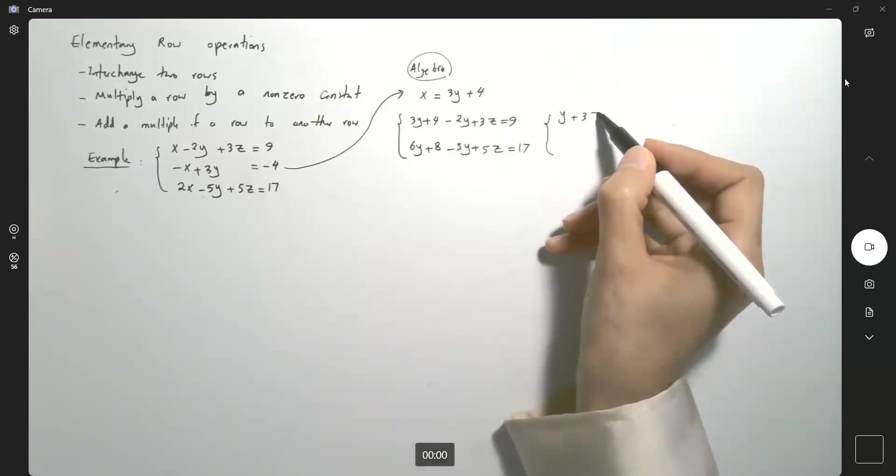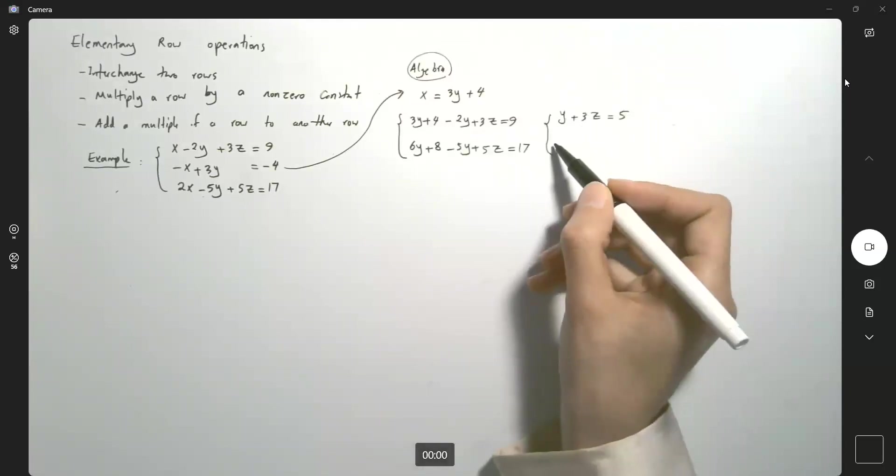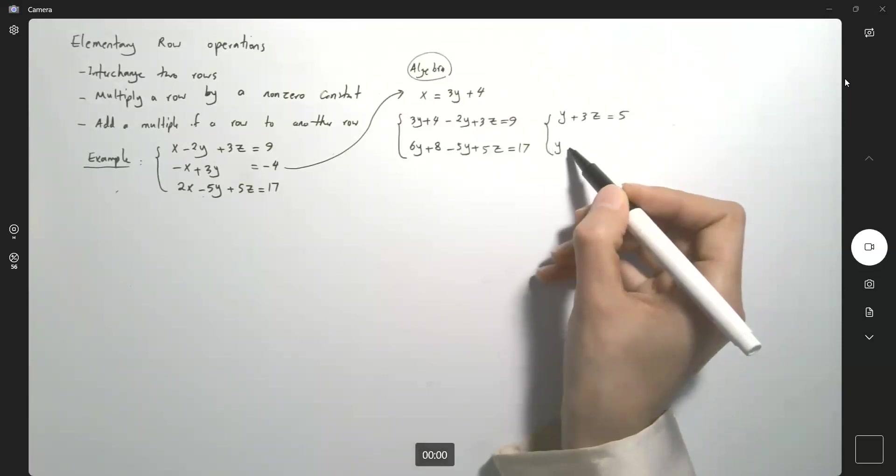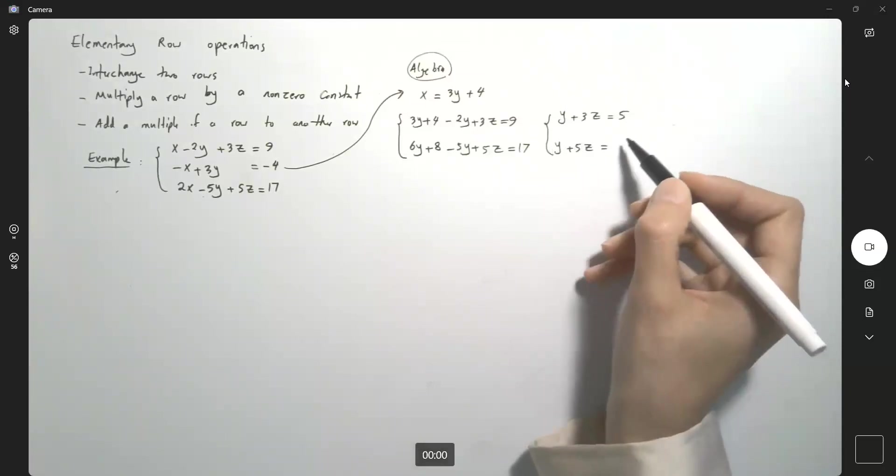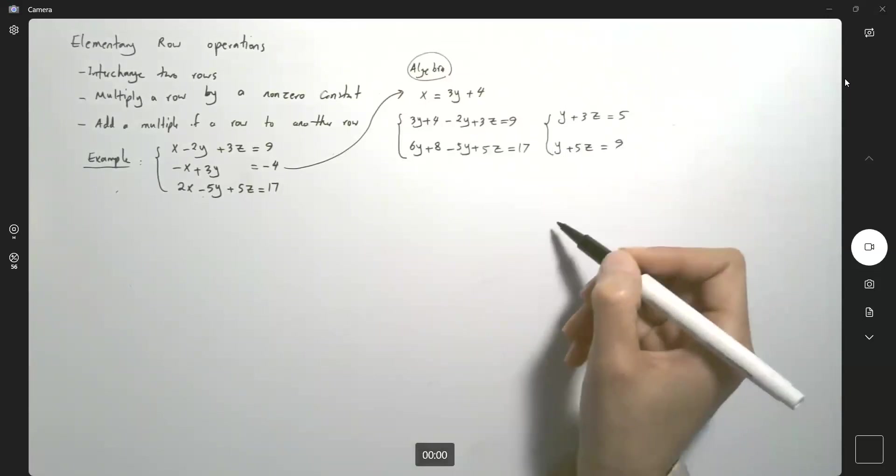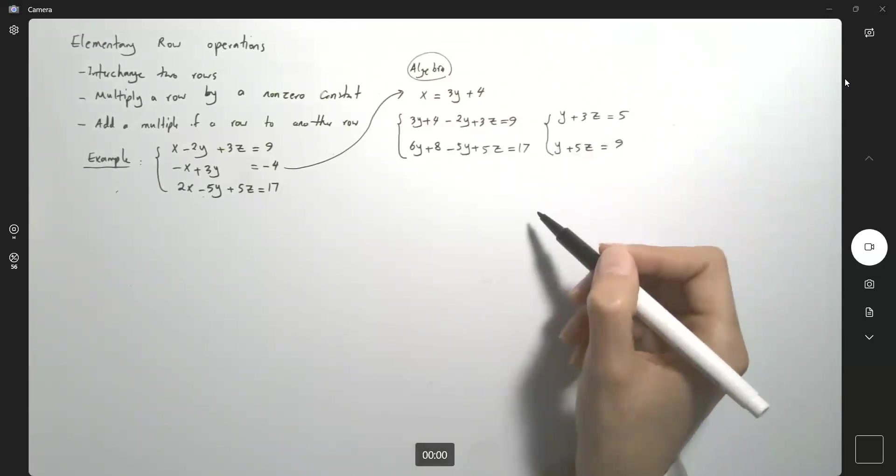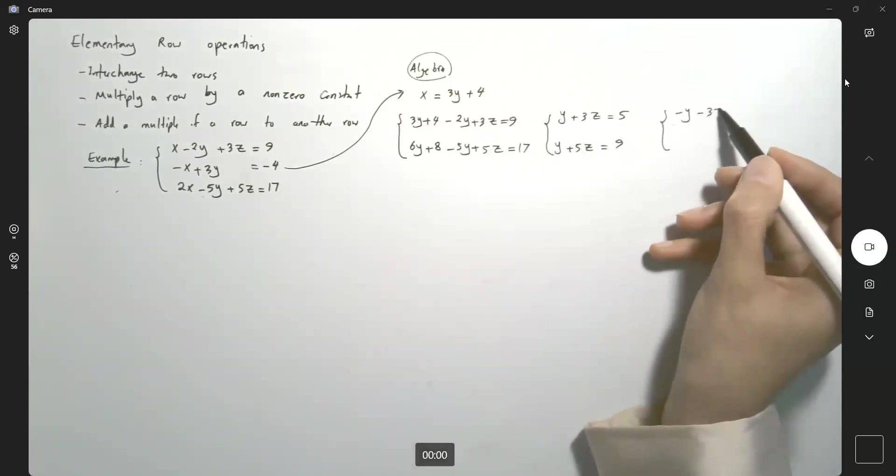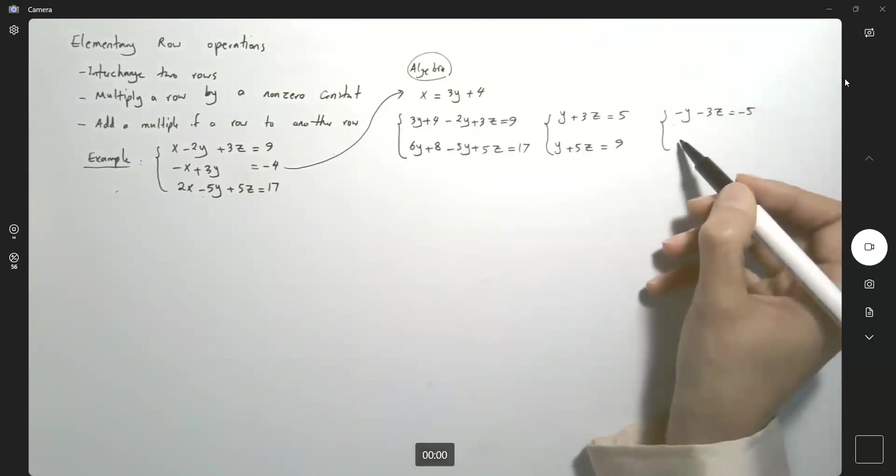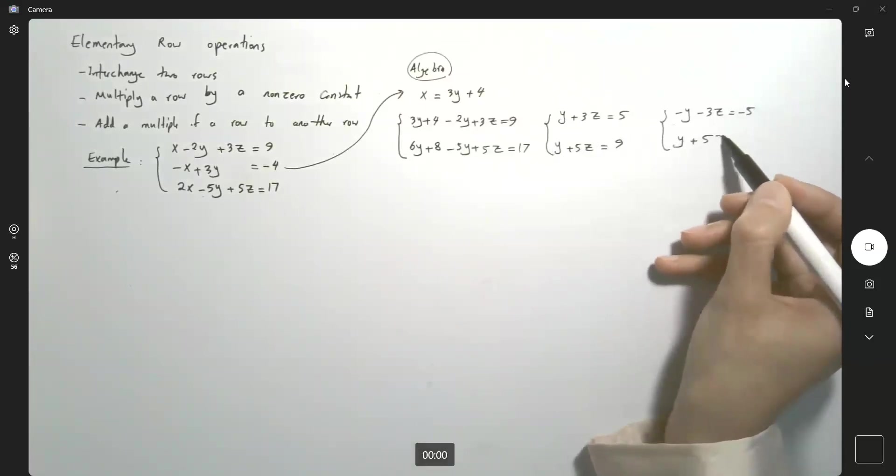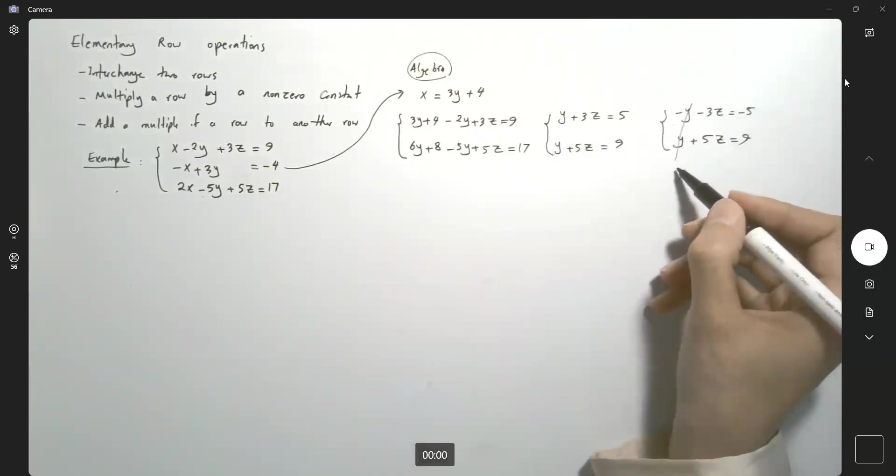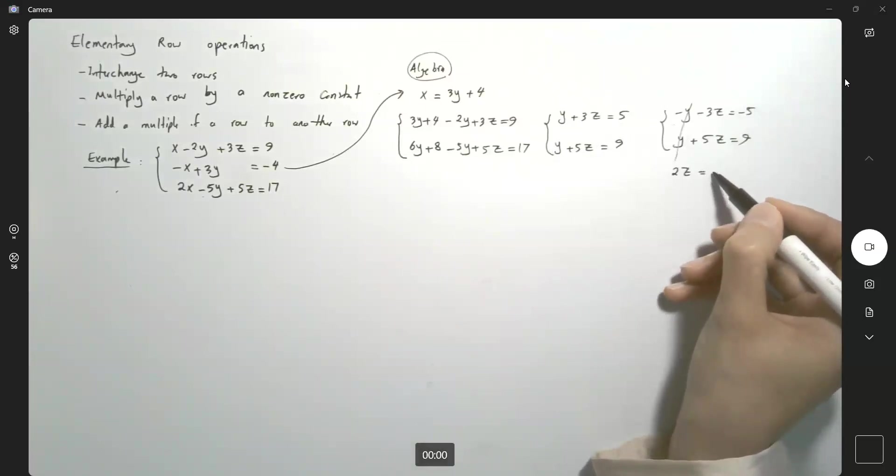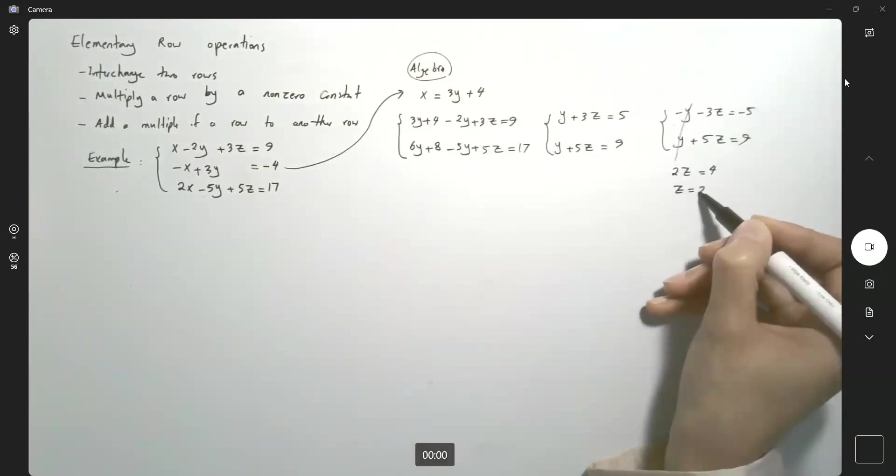y plus 3z is 5 and here we have y plus 5z equals 9. You can multiply the first equation by negative sign. It becomes negative y minus 3z equals negative 5 and y plus 5z is 9. So you can cancel out these two and you end up with 2z equals 4 or z is 2.